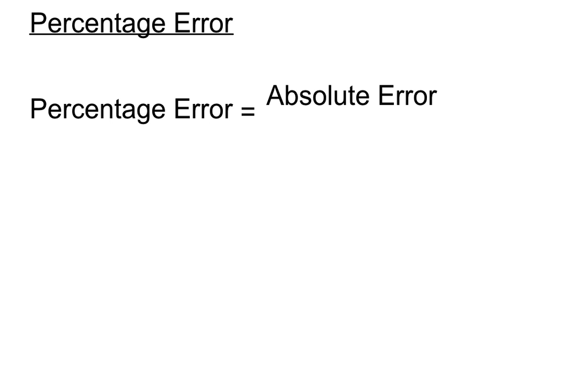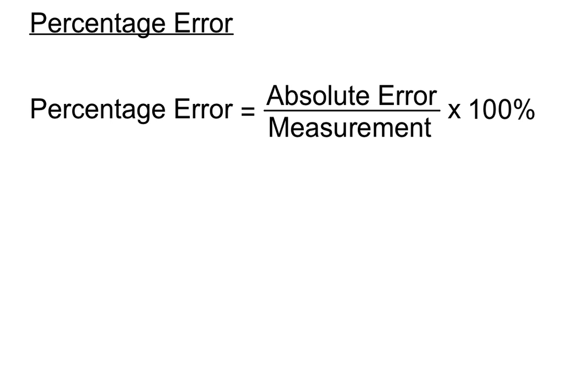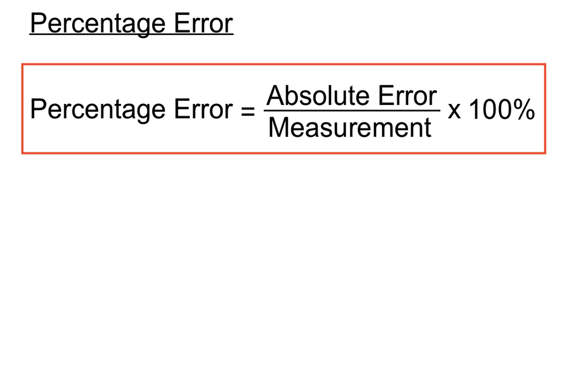Hello and welcome to a measurement video. In this video we're going to have a look at percentage error. When we measure something we have a margin for error that we have to take into account, and one way of expressing this margin for error is as a percentage. Percentage error is calculated by taking the absolute error over the original measurement, and turning that fraction into a percentage by multiplying by 100%. So that's our rule: percentage error equals absolute error over the actual measurement times 100%.